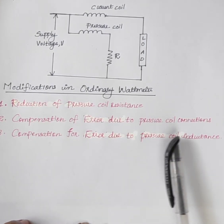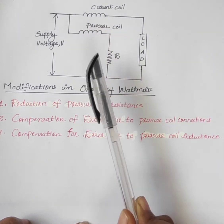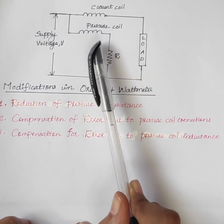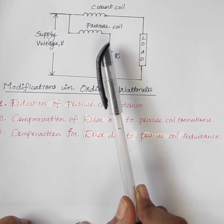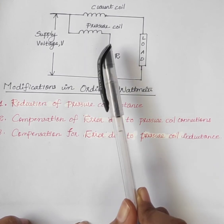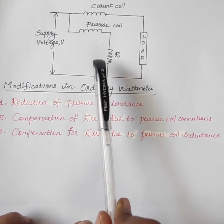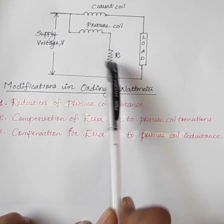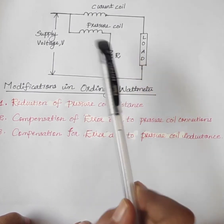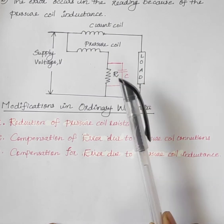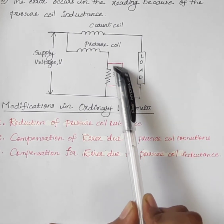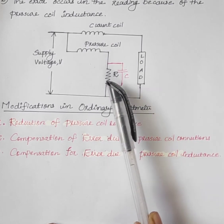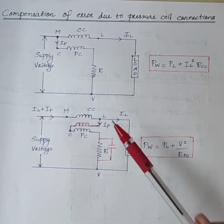The third modification is compensation of error due to pressure coil inductance. A small amount of inductance is present in the pressure coil of the watt meter, and this inductance causes error in the reading. This type of error can be reduced by connecting a capacitor in parallel with the pressure coil resistance, so that the capacitive reactance cancels out the inductive reactance of the pressure coil, making the pressure coil purely resistive.